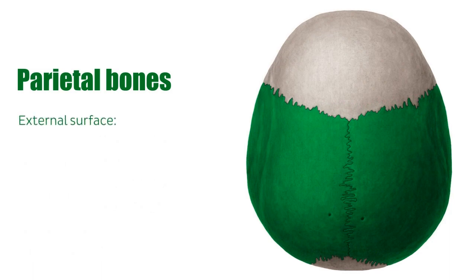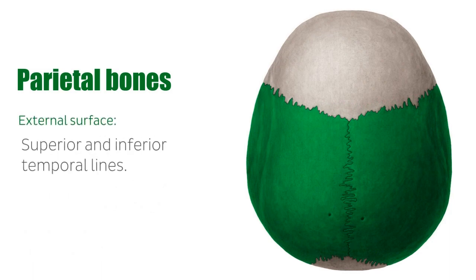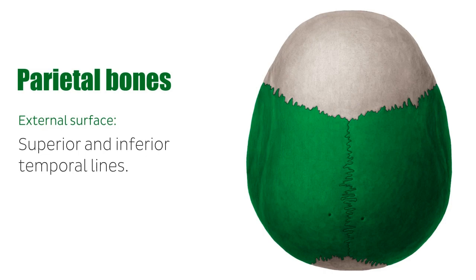The external surface features the superior and inferior temporal lines, where the temporal fascia and temporal muscle attach to, respectively. A parietal emissary vein connects the superior sagittal sinus with the veins of the scalp through the parietal foramen, which is located at the back of the parietal bones.